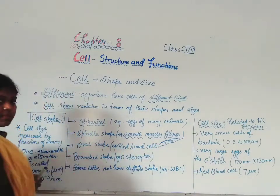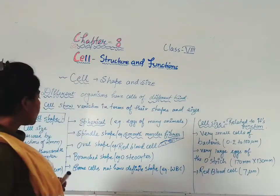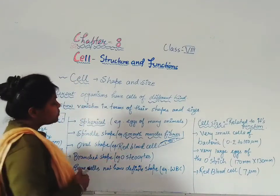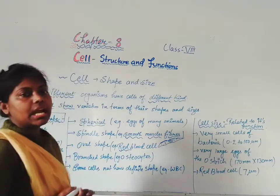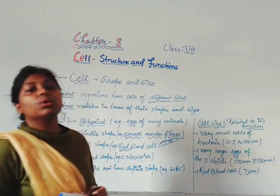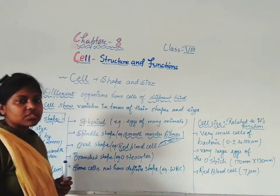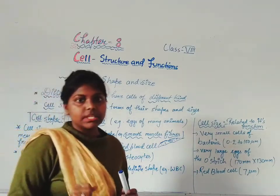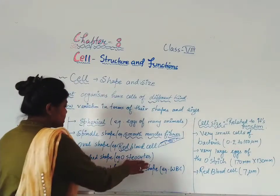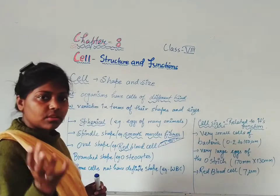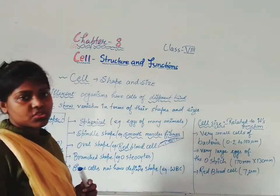The third shape is oval shape. Some cells are oval-shaped. For example, red blood cells in our body are oval-shaped. Some cells are branched in shape. Branched shape looks like branching. For example, osteocytes have a branched shape.